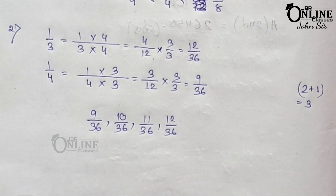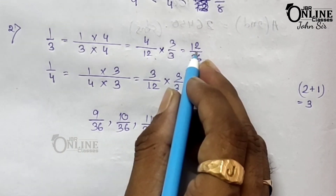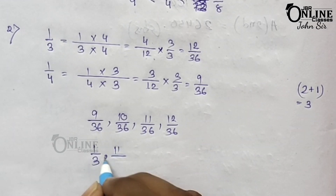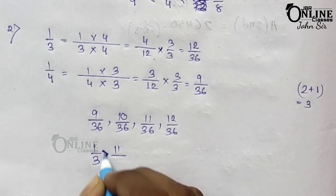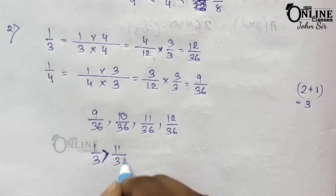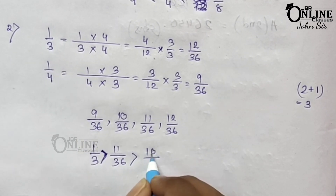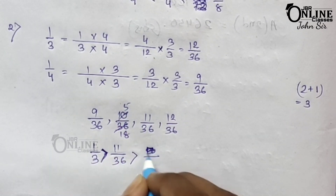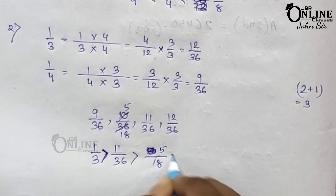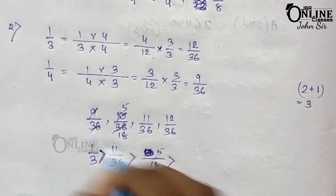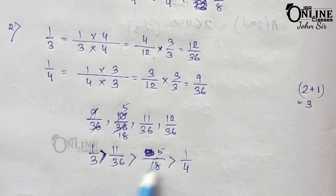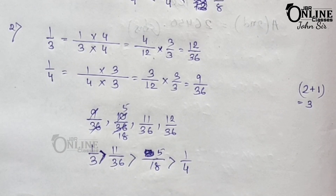Arranging these numbers in descending order: first is 12 by 36, which equals 1 by 3; second is 11 by 36; third is 10 by 36, which simplifies to 5 by 18; and the last one is 1 by 4. So: 1 by 3 > 11 by 36 > 5 by 18 > 1 by 4.